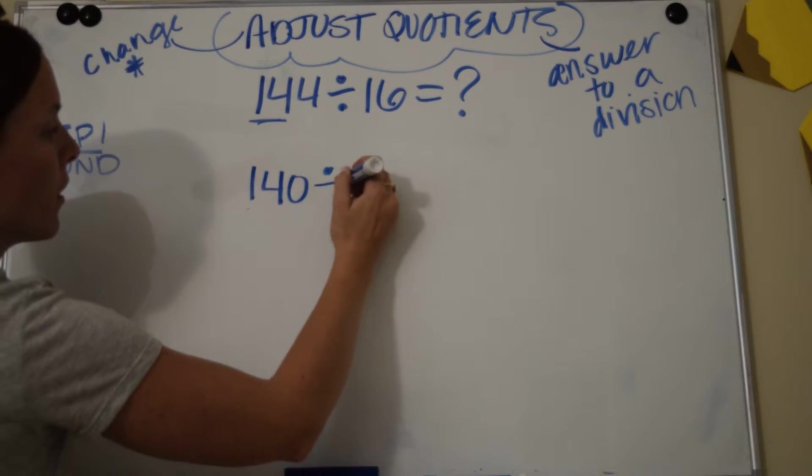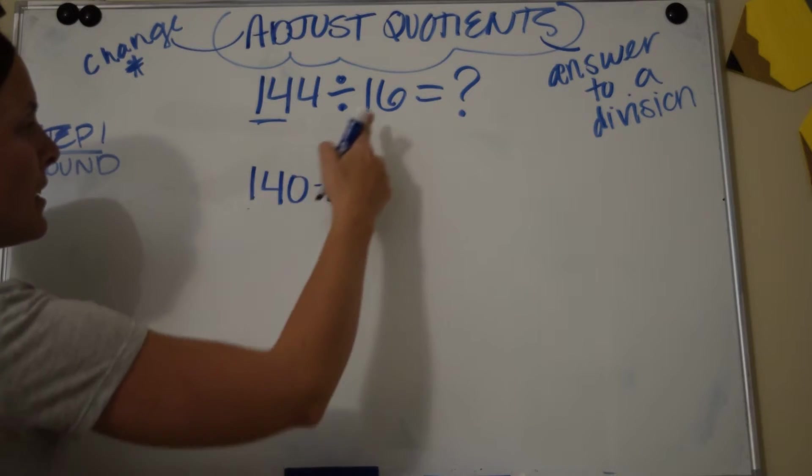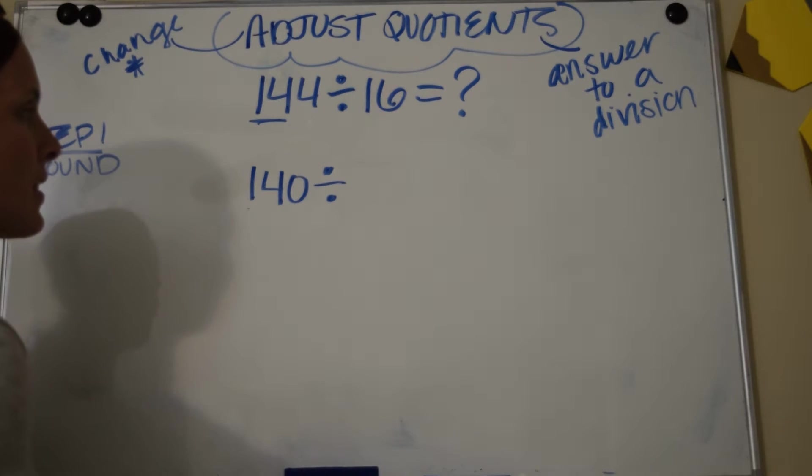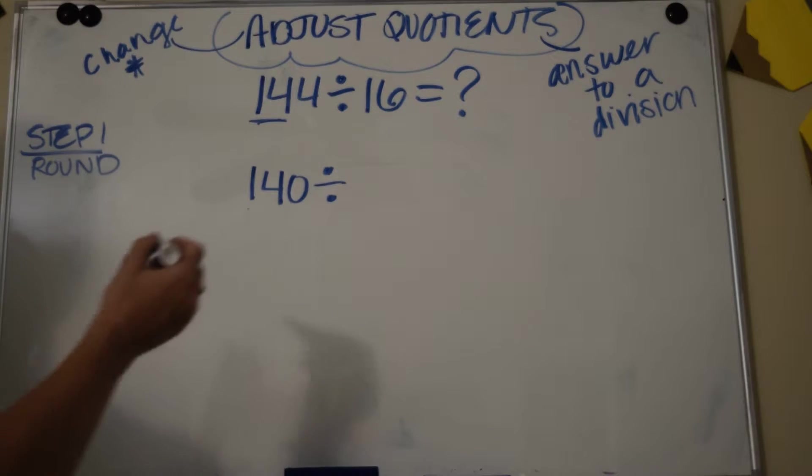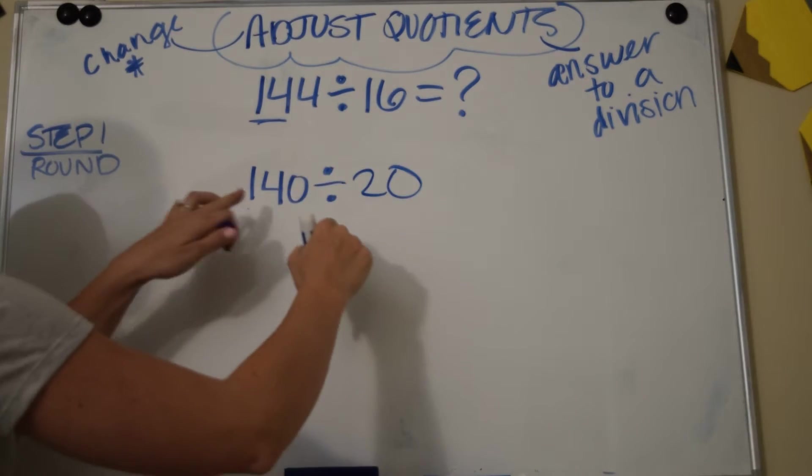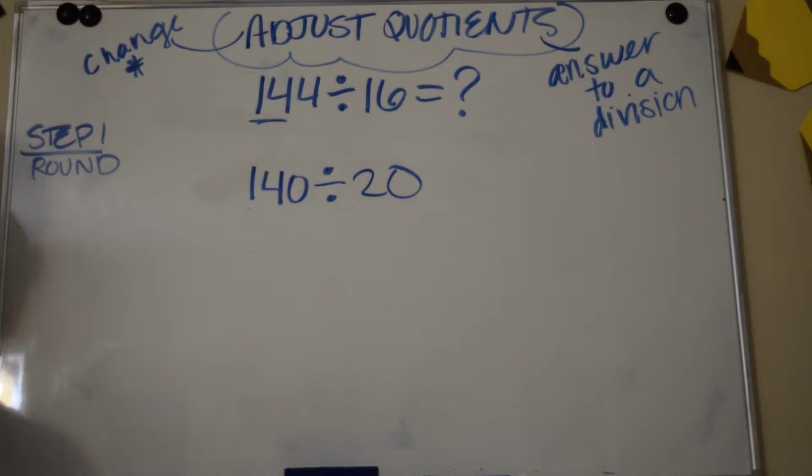And then I have 14 and 16. So what's the number that's around 16 that would maybe be easier to divide with my 14? So think of fact families. 14 divided by what is a fact family? Well, 16 would round up to 20, and 14 and 2 are a fact family, so I rounded up.